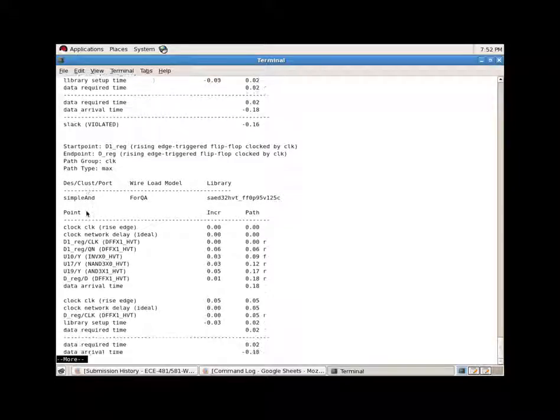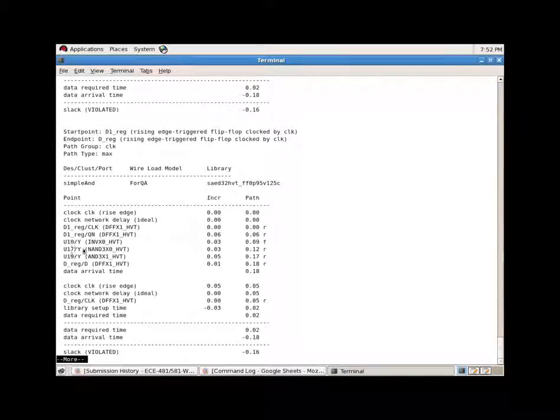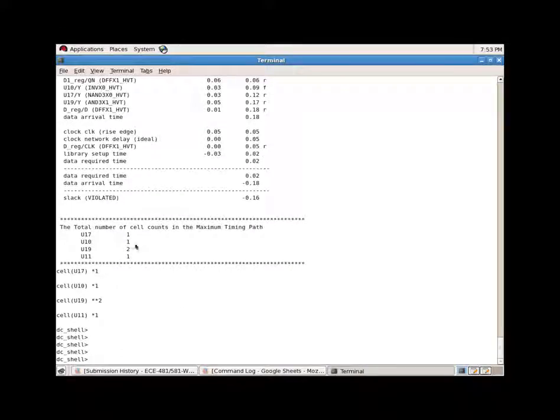For the second path, we have U19, U17, and U10. And you see the count shows two for U19 and then one for the others.